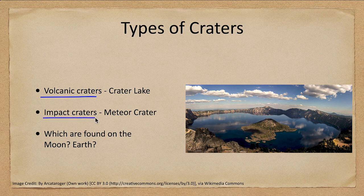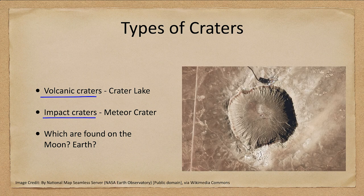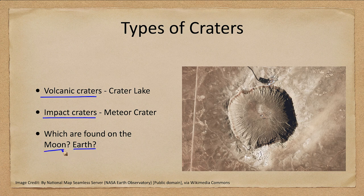And we have impact craters, which are caused by impacts. Here we see Meteor Crater in Arizona, and that is an impact crater. Other than one being filled with water, we can see there are a lot of similarities between the two. On Earth, we find both types — volcanic and impact craters. On the moon, we pretty much find impact craters.